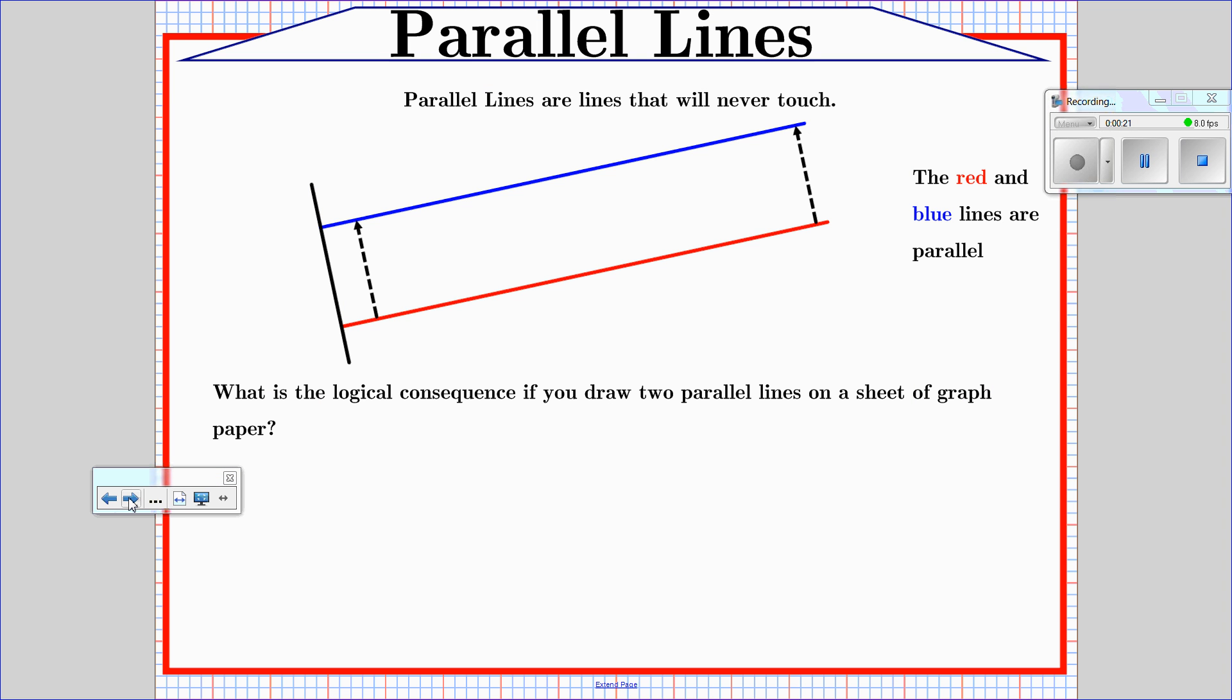Parallel lines are defined as lines that will never touch. If we look at the red and the blue line on the board, we can see that they are lines that never touch. So I ask you, what is the logical consequence if you draw two parallel lines on a sheet of graph paper?